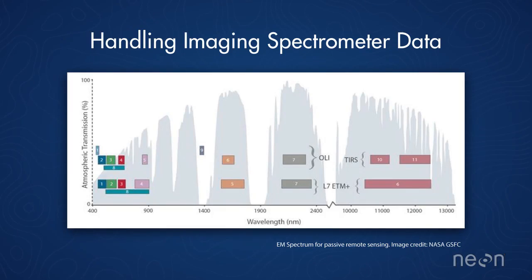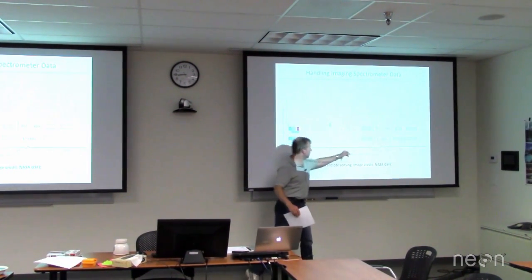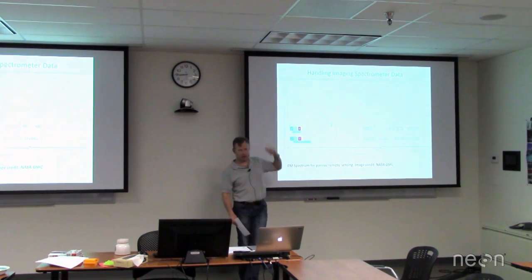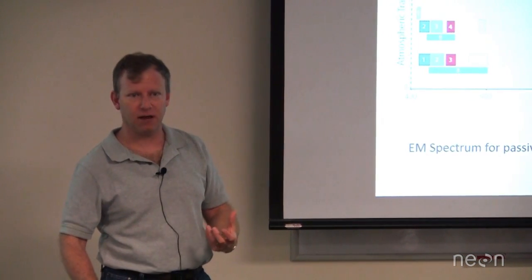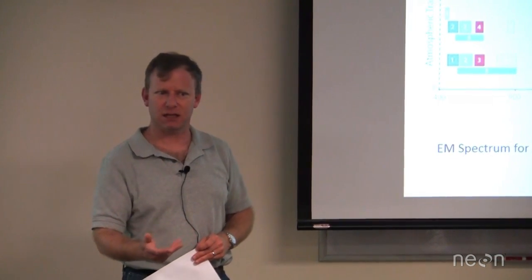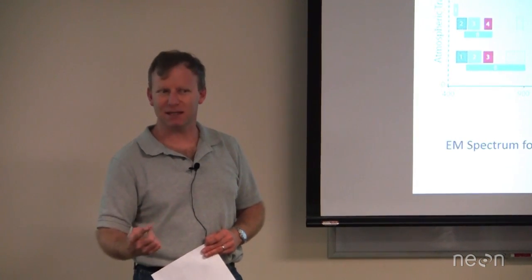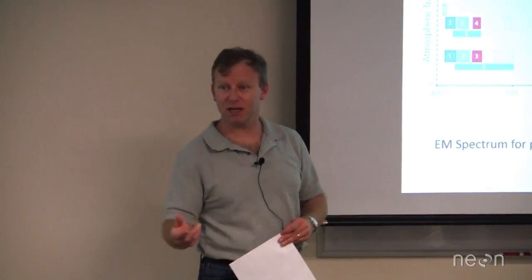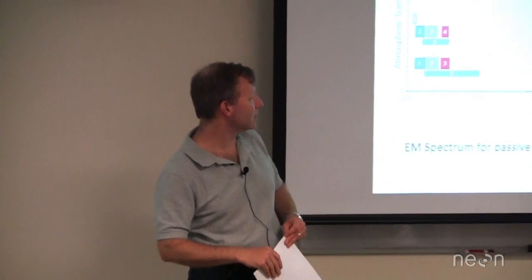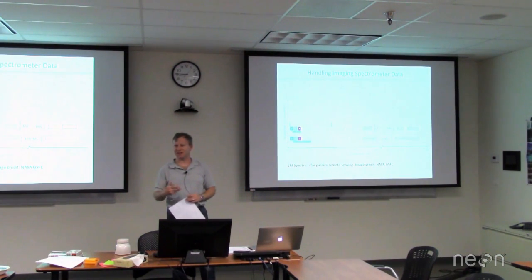There's a lot of the spectrum that we can cover. This is kind of the useful part for passive remote sensing — a nice diagram from NASA/USGS for running the Landsat program. You can see we run down to about 350 nanometers with our spectrometer, up to about 2,500. If they're going to bother to fly a satellite, they only have 15 minutes once or twice a day to downlink all of their data from several orbits.